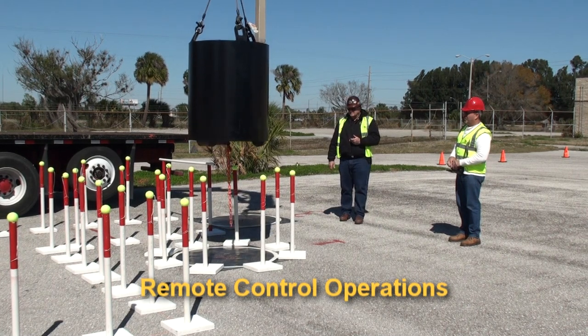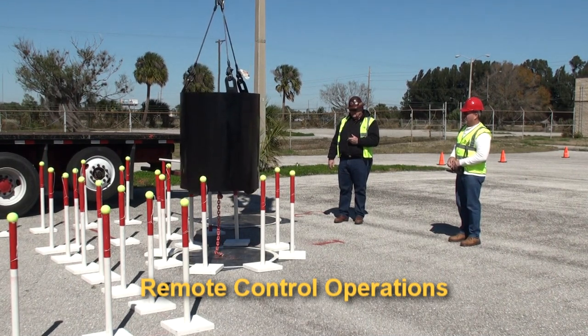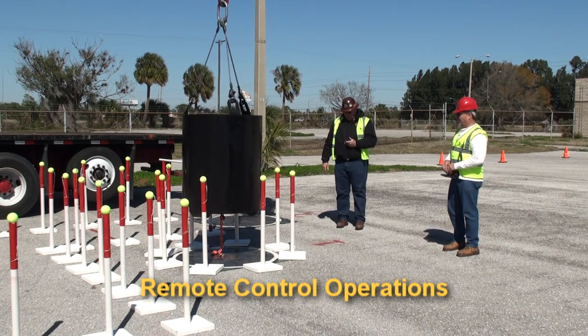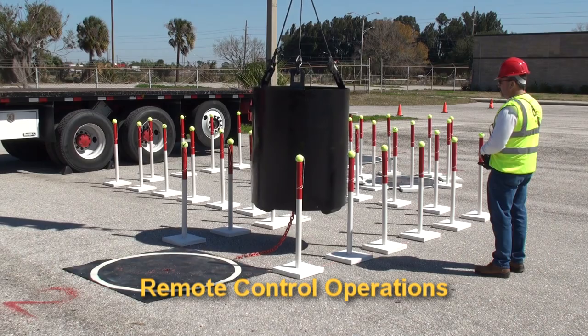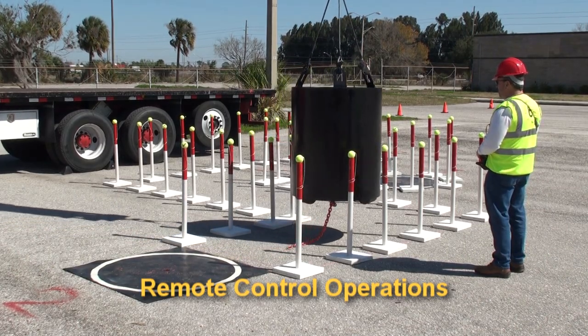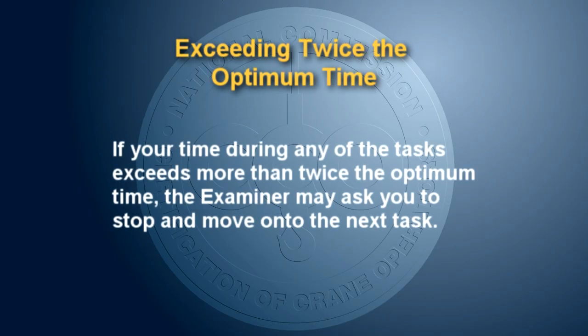If you are using a remote control, at no time during the familiarization period or test should you walk into any part of the course or walk underneath the test weight or boom. Walking underneath the test weight is considered an unsafe act and the examiner is required to stop the test. If your time during any of the tasks exceeds more than twice the optimum time, the examiner may ask you to stop and move on to the next task.